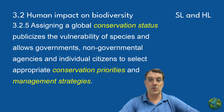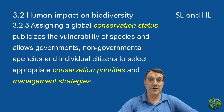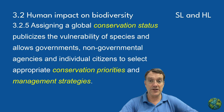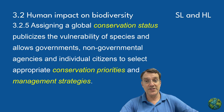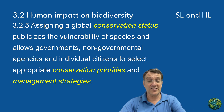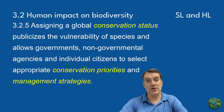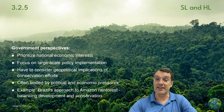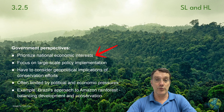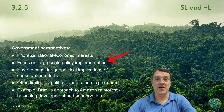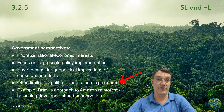Conservation status helps different stakeholders decide where to focus their efforts. Different groups approach conservation from unique perspectives. National governments establish protected areas and pass laws to protect species. NGOs run research programs, breeding centers, and advocacy campaigns. Individual citizens make choices about consumption, participate in citizen science, and may support local conservation initiatives. Each group has different resources and priorities, but they all play crucial roles in protecting biodiversity. Governments typically approach conservation by balancing economic development with environmental protection — they create national parks, enforce wildlife laws, and represent their countries in international agreements. However, they often face political and economic pressures that limit conservation actions.